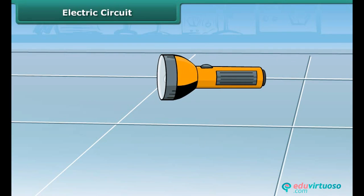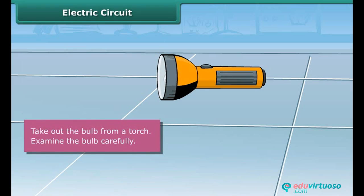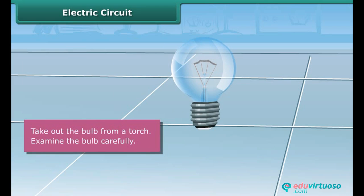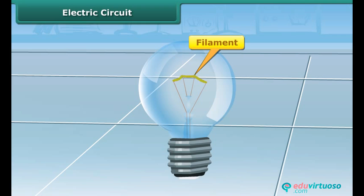Let us know how the bulb in a torch glows. Step 1: Take out the bulb from a torch. You can see that the bulb is a small globe of thin glass inside which a coiled filament is fixed on two thick wires. One of these thick wires is connected to the metal case around the base of the bulb.